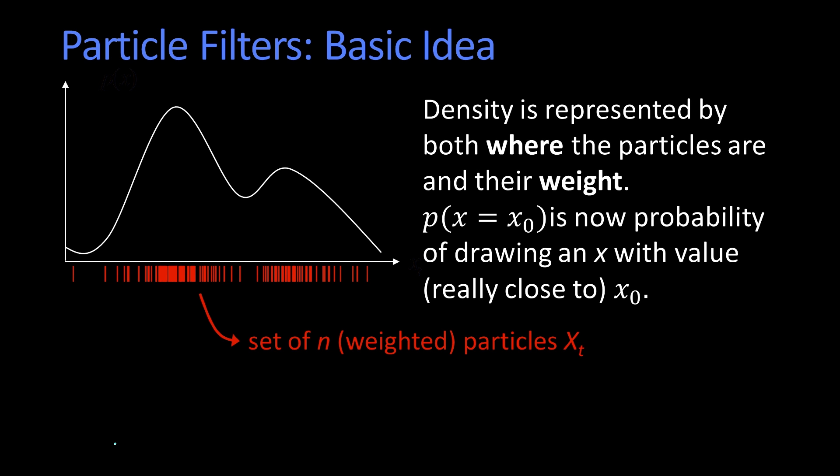The density is represented by where the particles are. So you see we have a nice high density here, so we got lots and lots of particles there. Not so many particles here, not so many here, and lots of them there. So that's where they are.